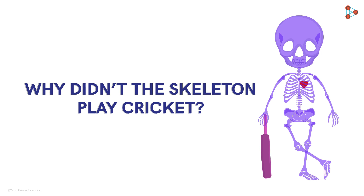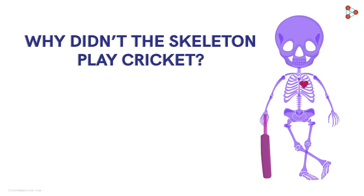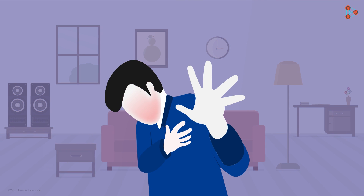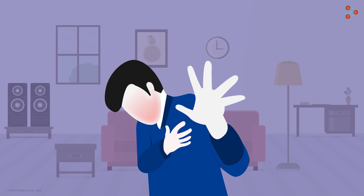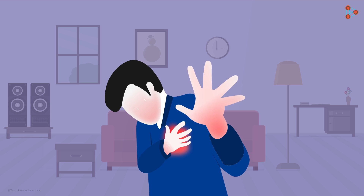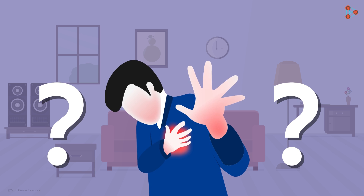Why didn't the skeleton play cricket? Because his heart wasn't in it. Now let's begin this Q episode with a situation. A person is experiencing cold sweat. He's also experiencing an aching sensation in his chest or arms that's spreading to his neck and jaw. With the symptoms given here, can you guess what the person is suffering from?